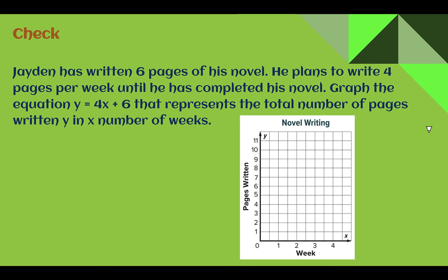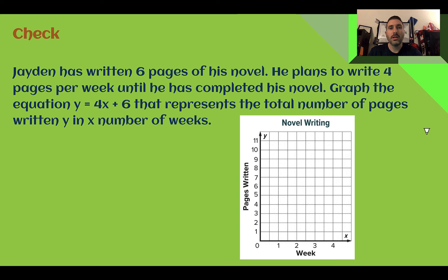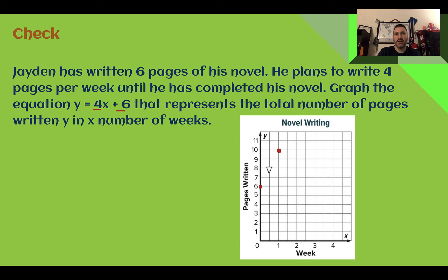Check your understanding: Read through the situation and create a graph that represents the pages written in x weeks. Pause the video now and complete the check. Let's check. Our y-intercept is at six, so we should have a dot up here at six — that's where he's starting. Then he's going to write four pages per week — that's our slope. Our weeks are separated by two spaces, so four spaces in one week. Keep going and our graph would look something like this, continuing that way until he was done with his book.